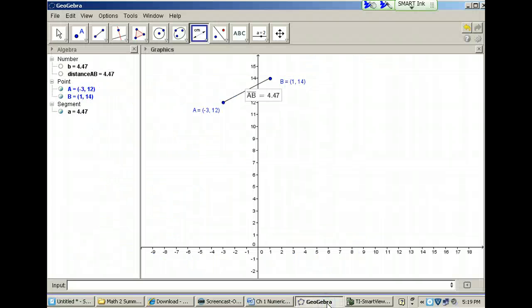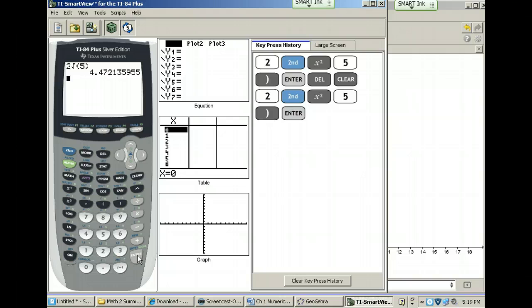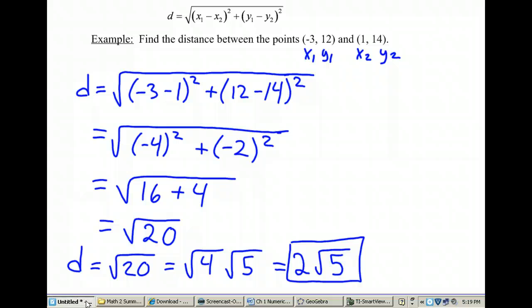But remember, when I was in GeoGebra, I got 4.47. So I'm going to go to my calculator here, and I'm going to just type in 2 and then 2nd square sign for the square root of 5. So 2 times the square root of 5. What does that equal? 4.47 approximately. A little more decimals after that. So we got the right answer then.